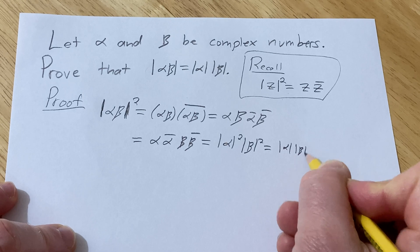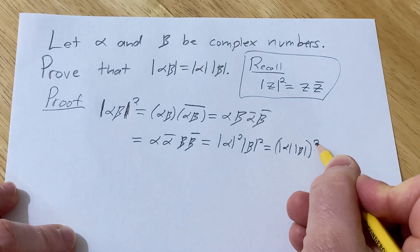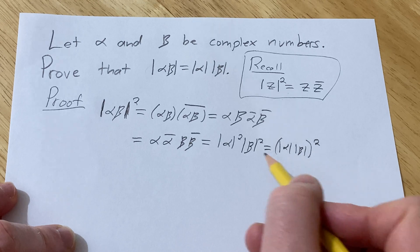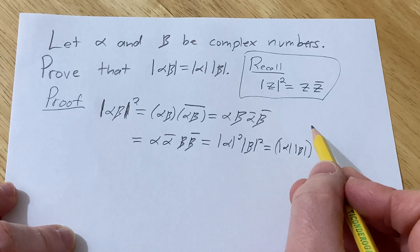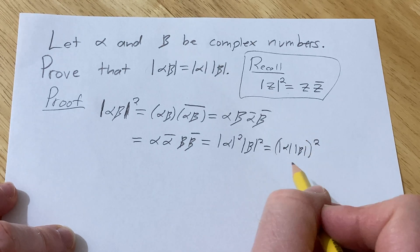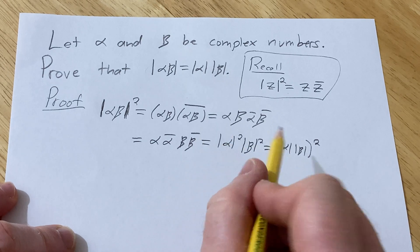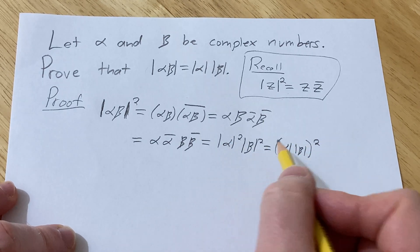So we can write this now as the modulus of alpha modulus of beta squared, simply using properties of real numbers. Because remember, the modulus of alpha is a real number, same thing with the modulus of beta. It's also called the absolute value of the complex number alpha.